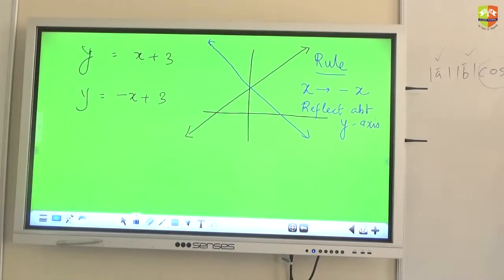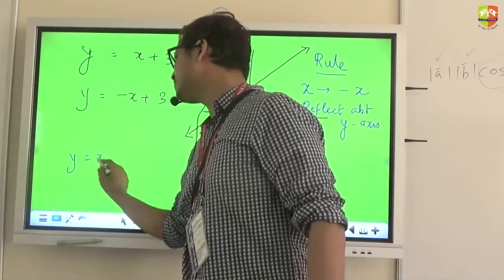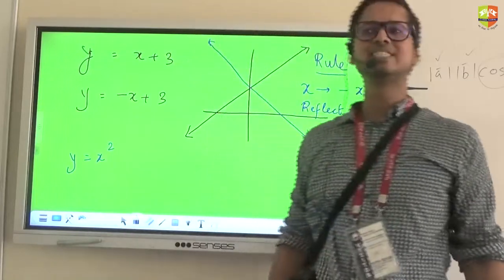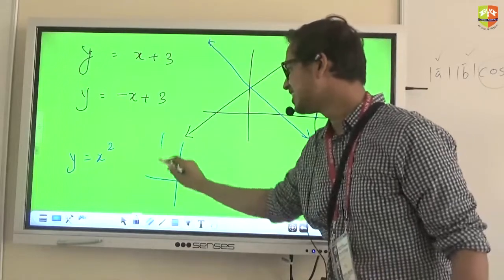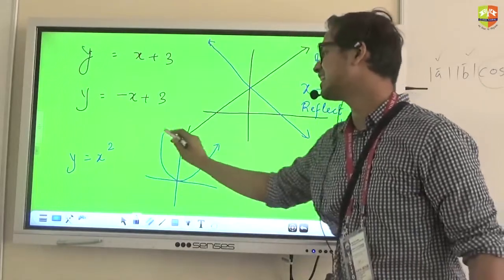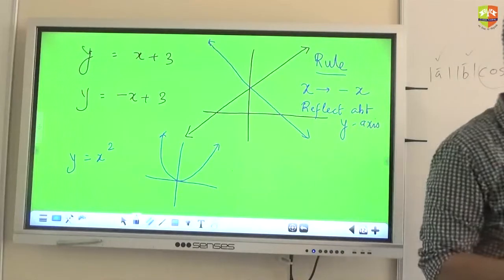Now the funny thing is, I did not show you this on Y equal to X square because you would not appreciate it because the moment you replace x with minus x, nothing happens to the graph. Because the graph was originally the mirror image about Y axis, correct? So even if I reflected about Y axis, will you see any change in the graph? Nothing.